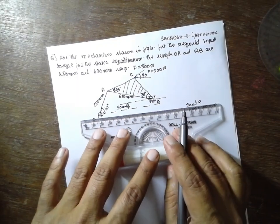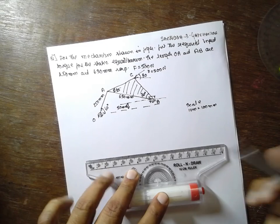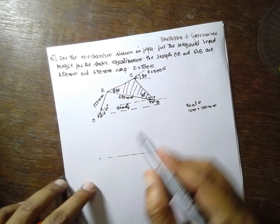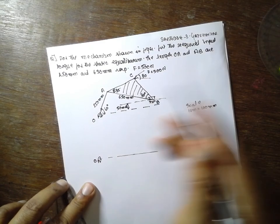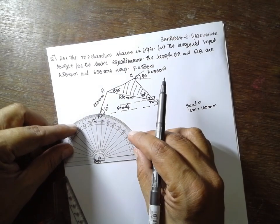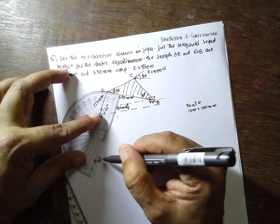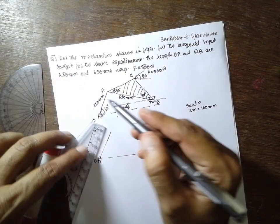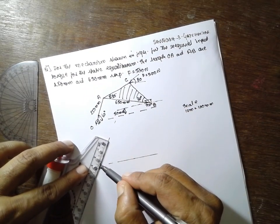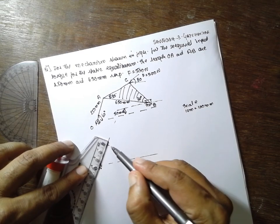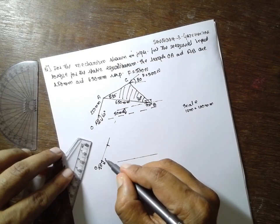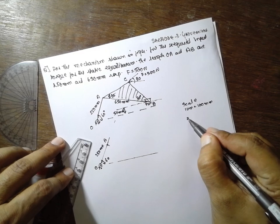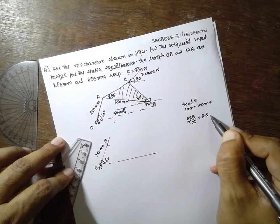Now, first I will draw a horizontal line. I will consider this point as O. At 60 degrees, OA is 250 mm, that is 2.5 cm. 250 divided by 100 is 2.5 cm.